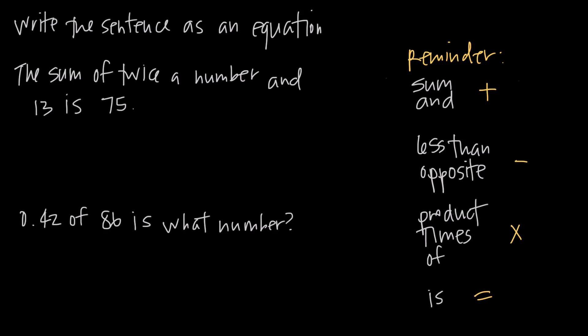In this video we're talking about how to turn a word problem into an equation. Sometimes we're going to be given a sentence like this, the sum of twice a number and 13 is 75. And what we need to do is come up with an equation so that we can find that number that they're asking for.